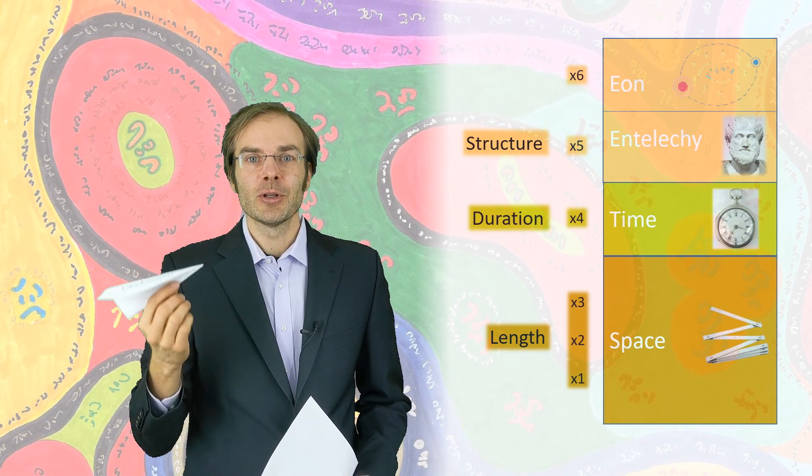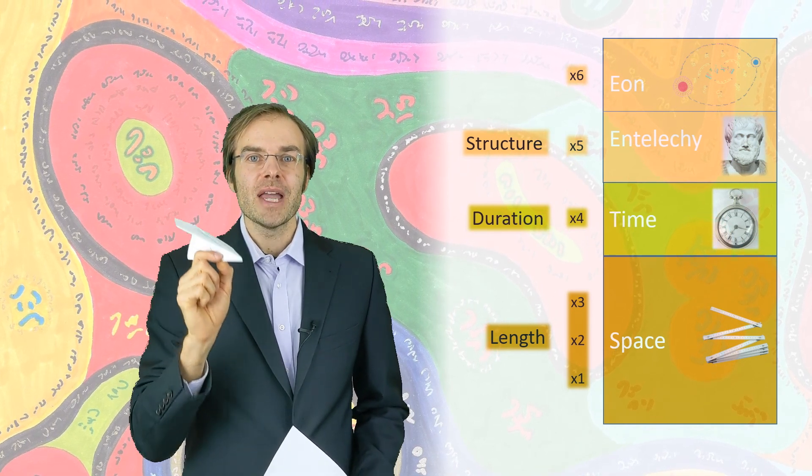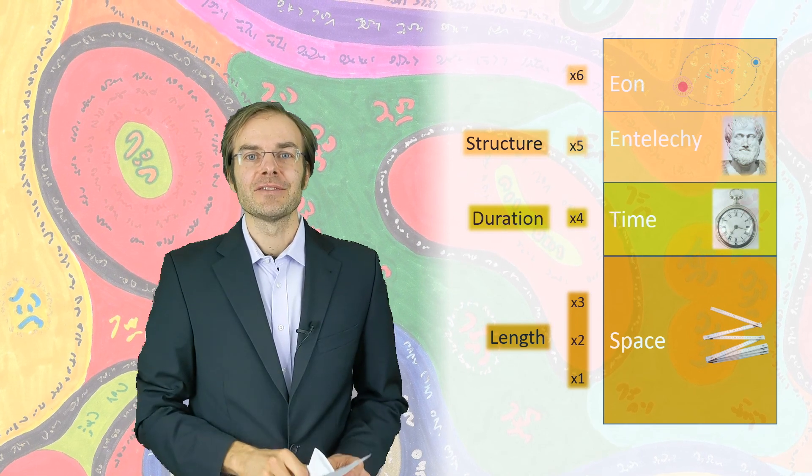This system is called Centrometry. And this Centrometry is the kind of scale we are applying to our dimension x5.